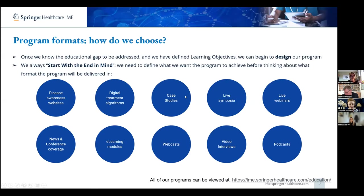At the very start of a program, we will have identified the educational gap we're going to address and defined our learning objectives. At that point, we can really begin to think about the design of our program and which format we're going to choose. It's quite an old cliché but we do start with the end in mind and work backwards — thinking about what the program should achieve before thinking about what format to deliver it in.